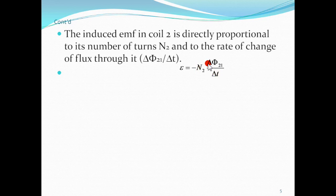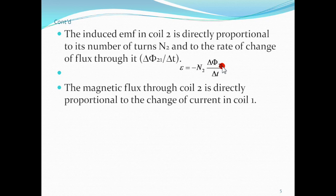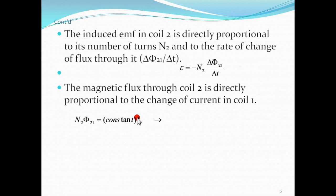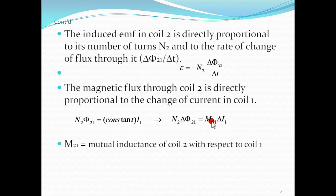The change of flux in the secondary coil is caused by the change of current in the primary coil. Since magnetic flux is proportional to current, the change of flux in the secondary coil N2·Φ₂₁ is directly proportional to the change of current in the primary. We introduce a constant M21, which is known as the mutual inductance of coil two with respect to coil one.